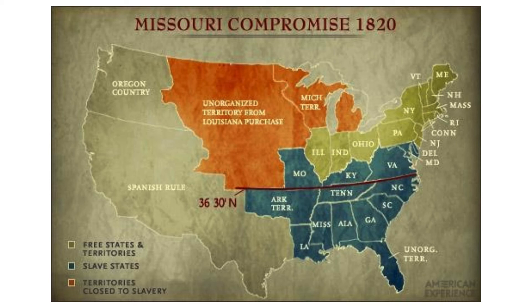So like the Northwest Ordinance — which affected these states where they said slavery won't exist — the Missouri Compromise further creates this regional distinction.